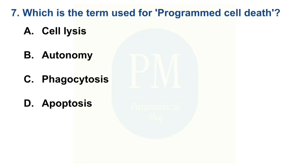Option A: Cell lysis. Option B: Autonomy. Option C: Phagocytosis. Option D: Apoptosis. The correct option is Option D — Apoptosis.